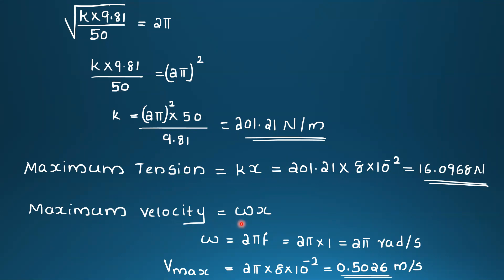Maximum velocity equals ω times x. Omega equals 2π times f, which is 2π into 1, equal to 2π radian per second. Maximum velocity equals 2π times 8 × 10⁻² equals 0.5026 meter per second.